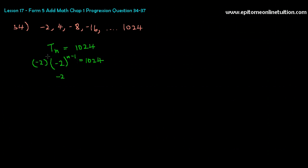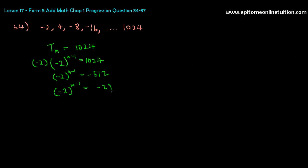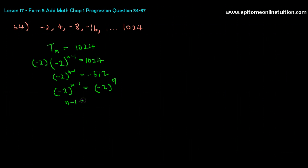You have to leave this as it is and move the negative 2 over, so power n minus 1 remains. 1024 divided by negative 2 is negative 512. Since there are both negatives, you can basically ignore them, and negative 2 to the power n minus 1 should be negative 2 to the power of 9 if you test your calculator. When the bases are equal, the indices would also be equal. So n minus 1 is equal to 9, n is equal to 10.